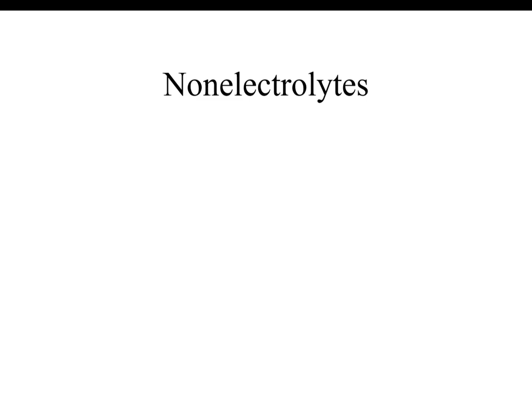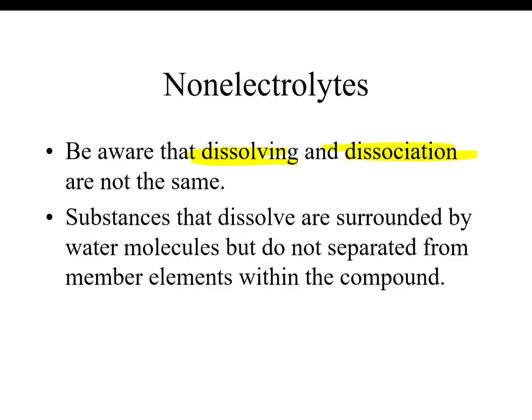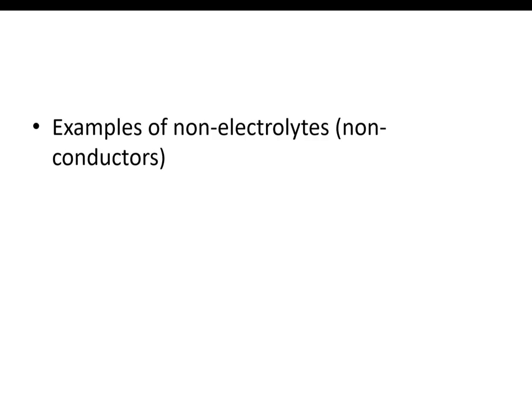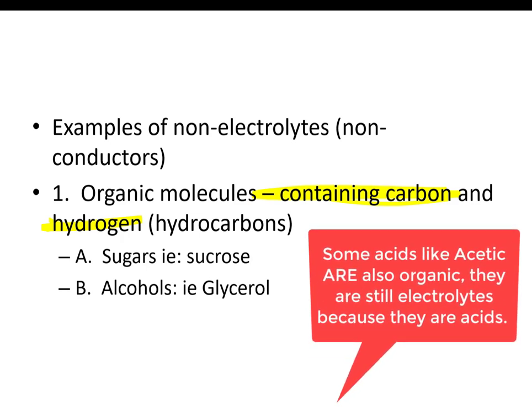Non-electrolytes are substances that don't conduct electricity in water. It's important to remember that dissolving and dissociating are not the same — lots of things can dissolve in water but not everything dissociates. Most things that dissociate are ionic, acids, or bases. Substances that just dissolve are surrounded and hydrated by water molecules but do not break down into dissociated particles. Examples of non-electrolytes include organic molecules — anything containing carbon and hydrogen — such as sugars like sucrose or alcohols like glycerol or ethanol.